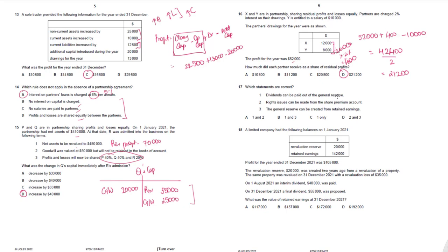Question 17. Which statements are correct? Dividends can be paid out of general reserve — correct, as general reserve is a revenue reserve. Rights issue can be made from share premium account — incorrect; bonus shares use reserves, not rights issues. General reserve can be created from retained earnings — correct. So statements 1 and 3 are correct, option B.